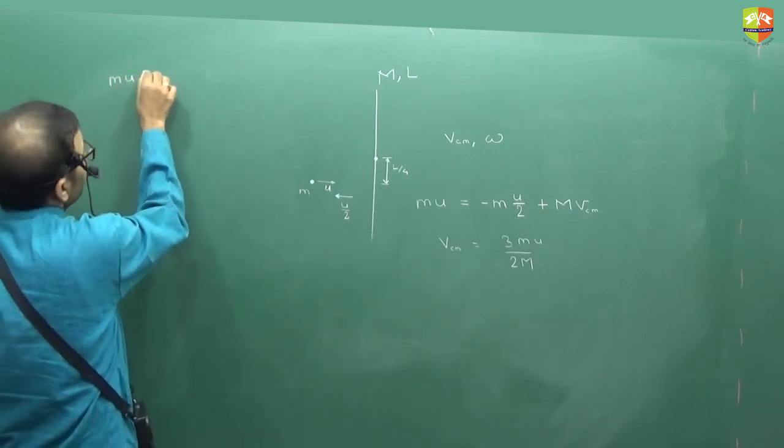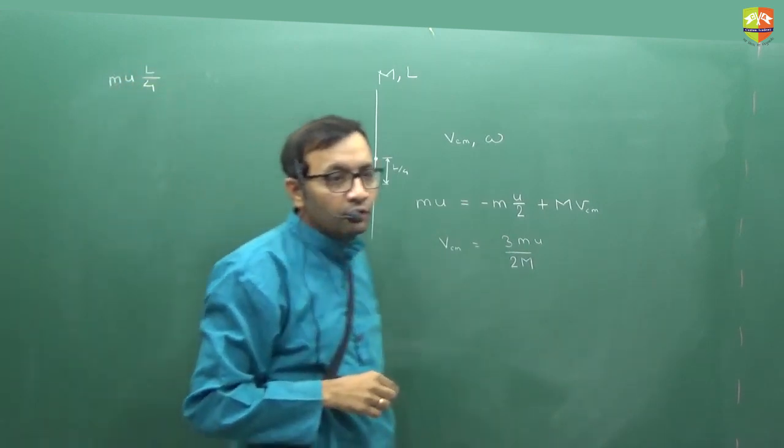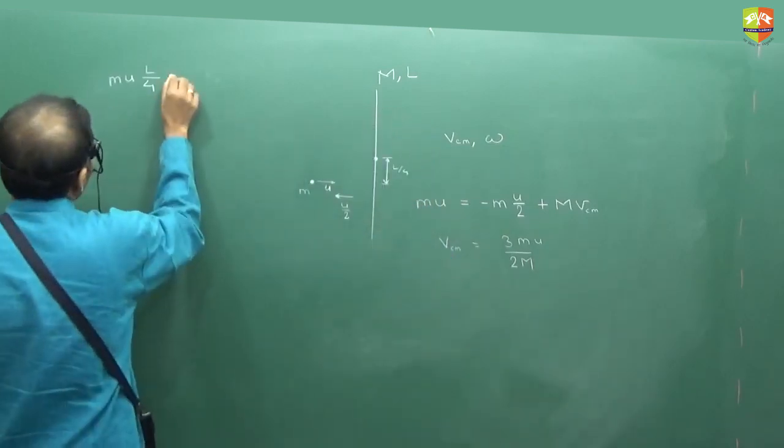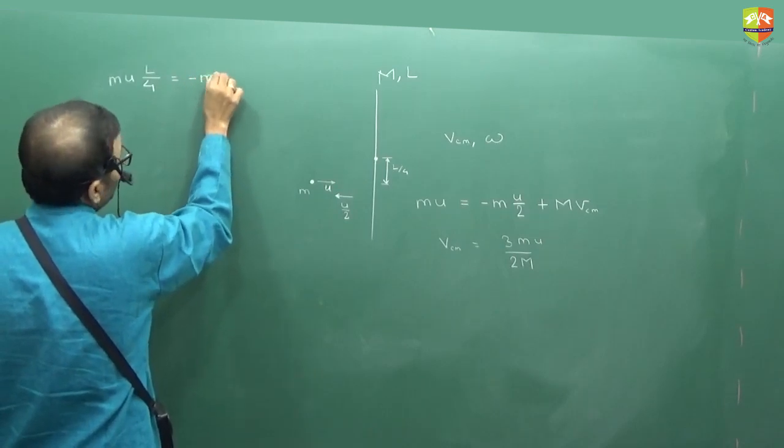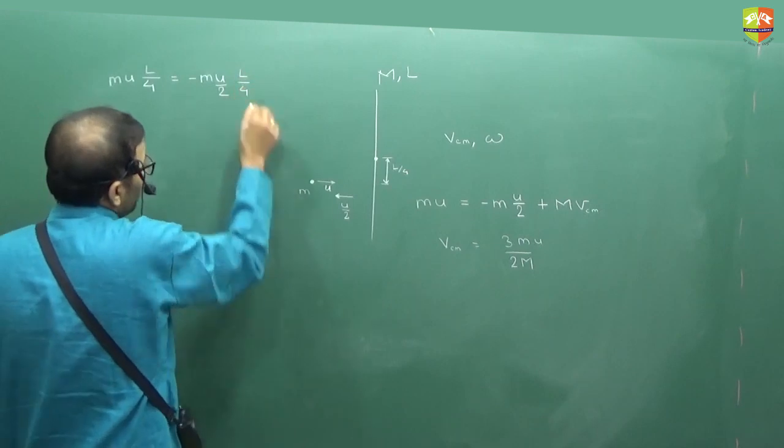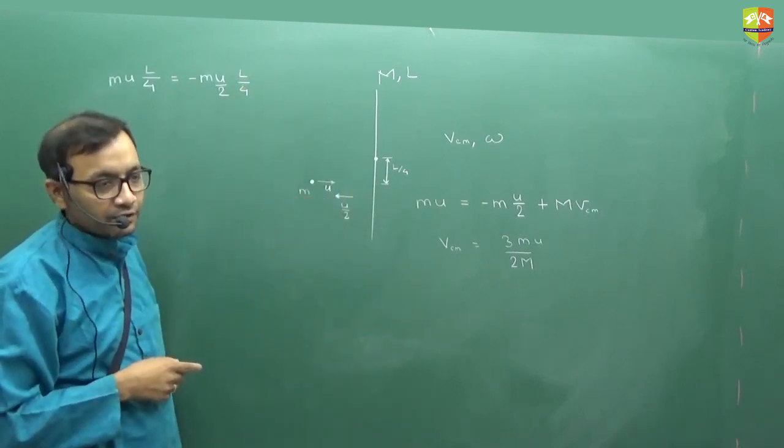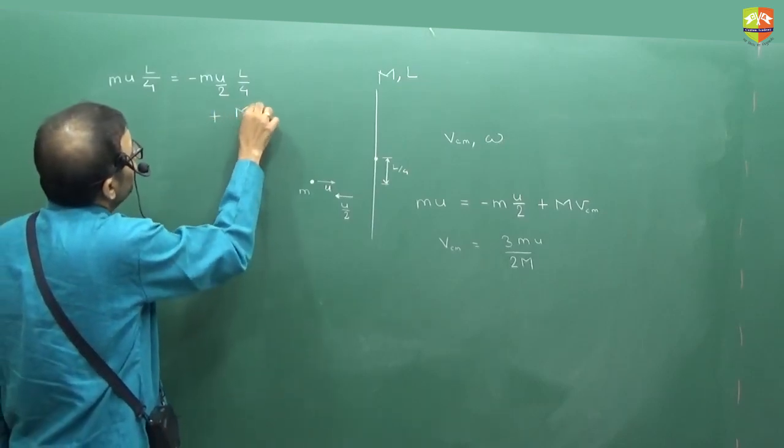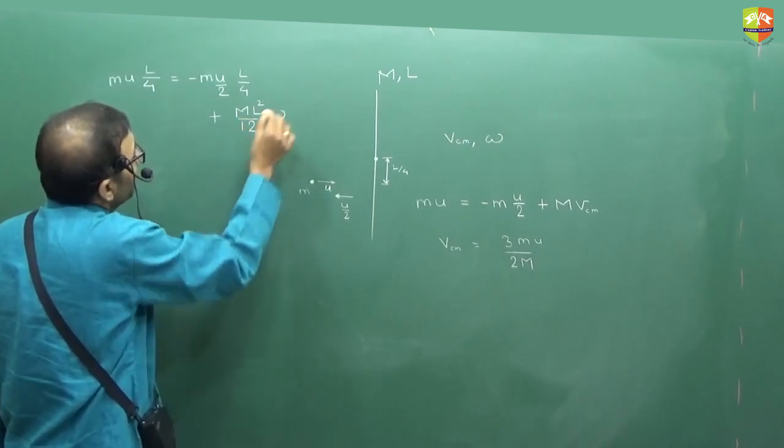So what will be the initial angular momentum of the system? m into u into l by 4. Yes or no? Yes. This will be equal to what? Minus of m into u by 2 into l by 4. Now angular momentum has changed for the particle after collision. Then what? Plus ICM which is m l square by 12 into omega.